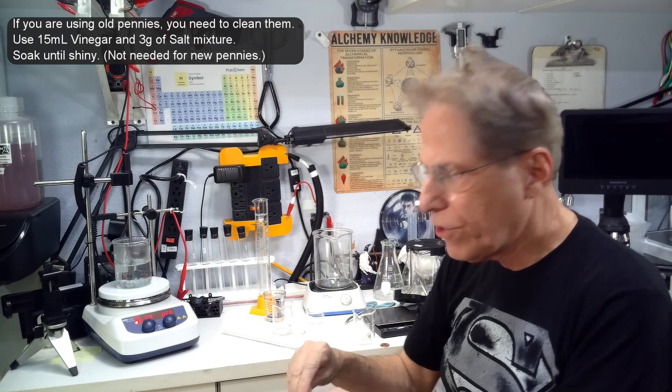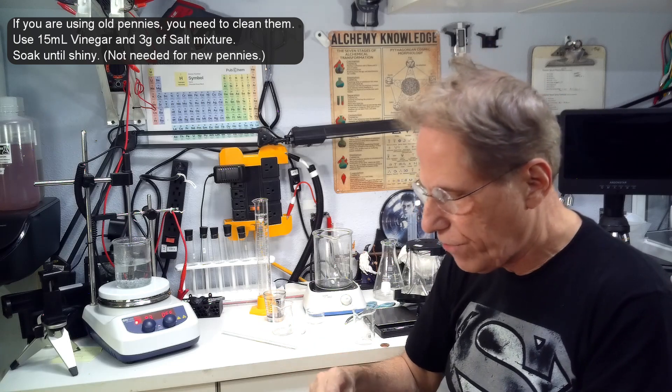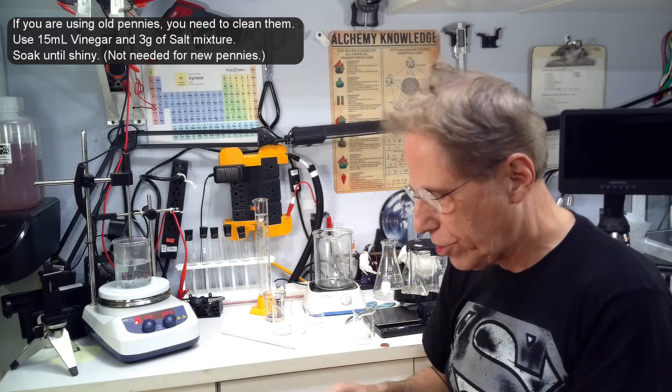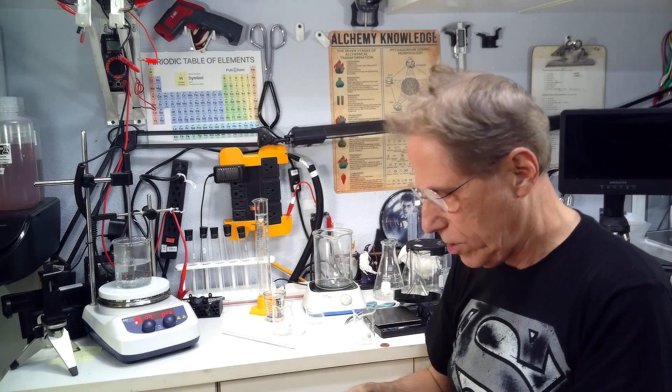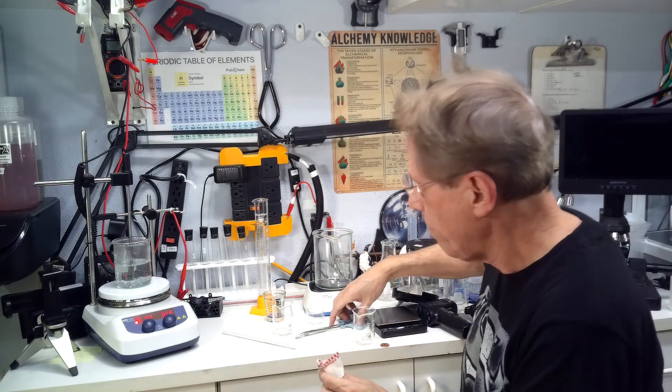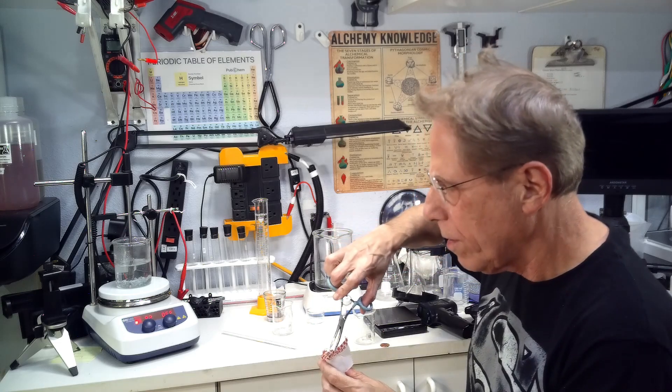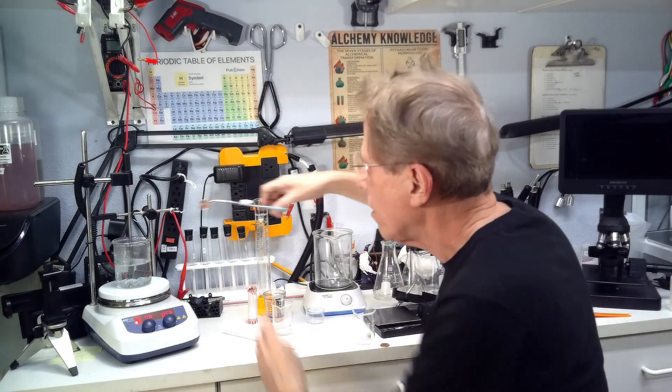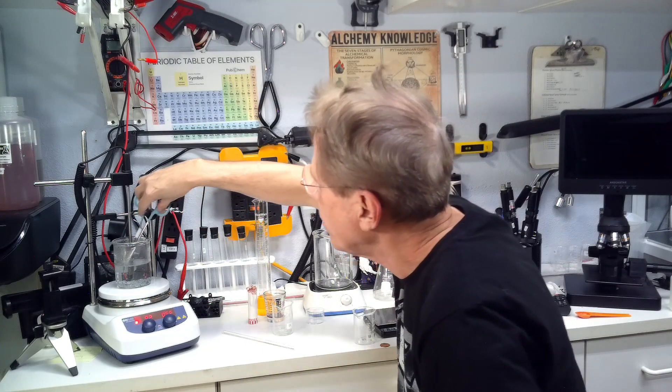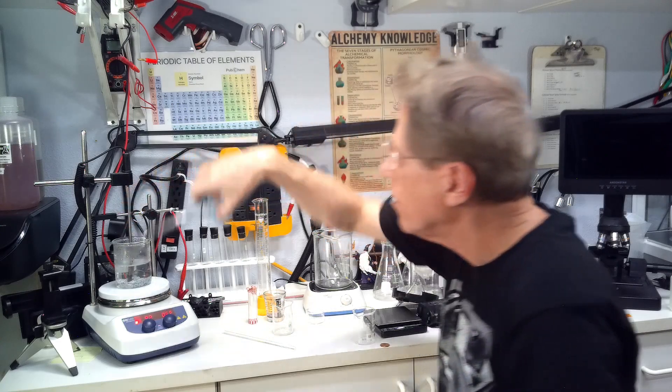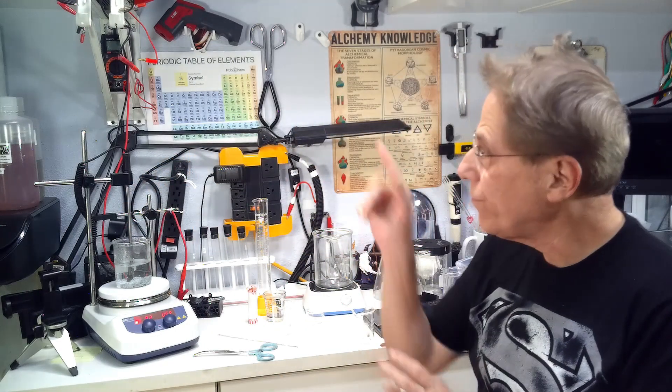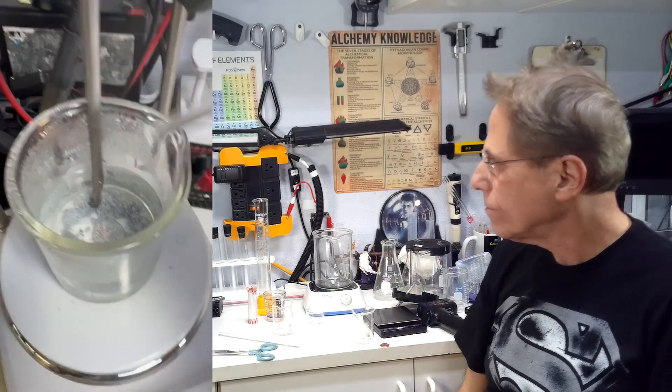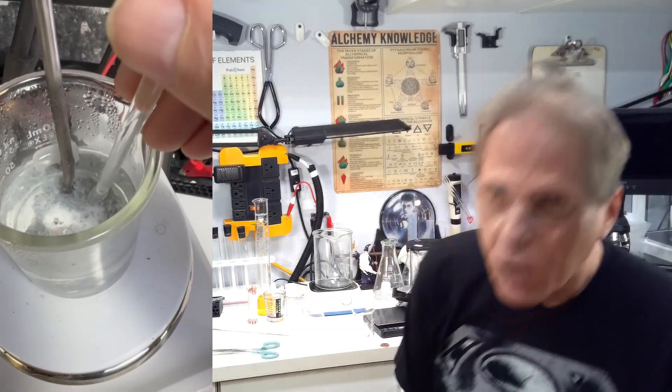If you're using old pennies, you will have to clean the pennies in vinegar and salt first and make sure you don't actually touch the pennies. I'm going to use my little forceps here. I'm going to take one of the pennies out without touching it and we're going to put it in here and we're going to wait and I will show you a video of how this thing is changing color right here.